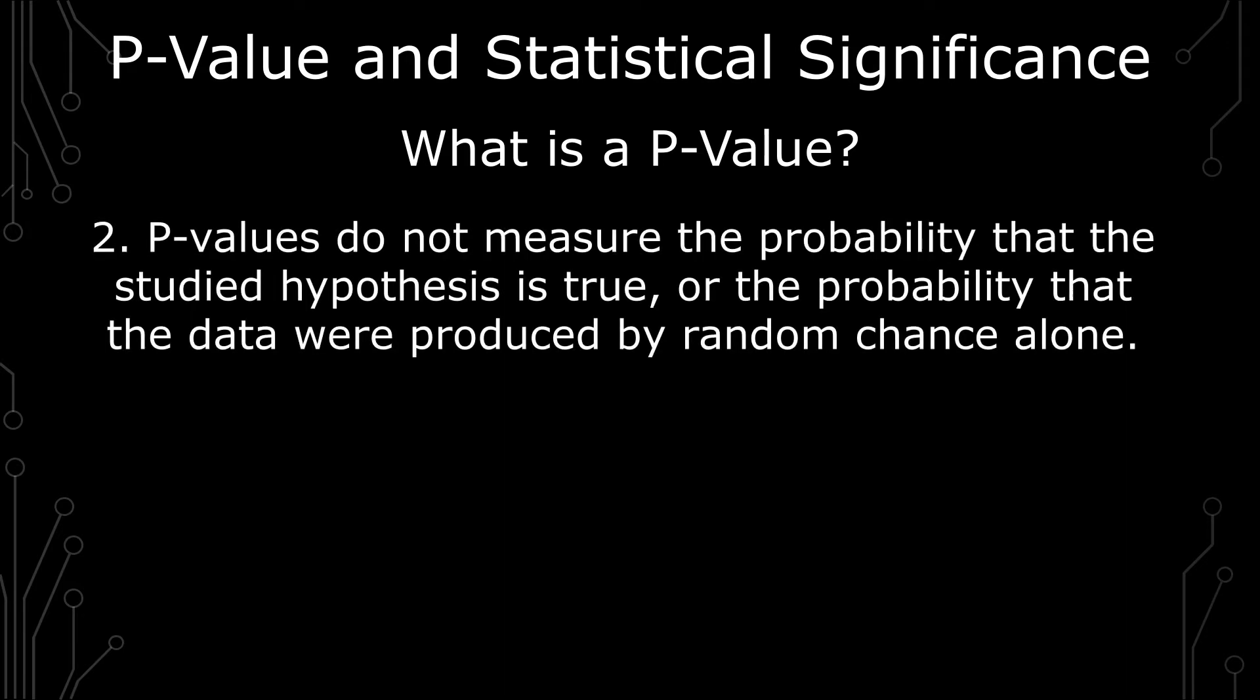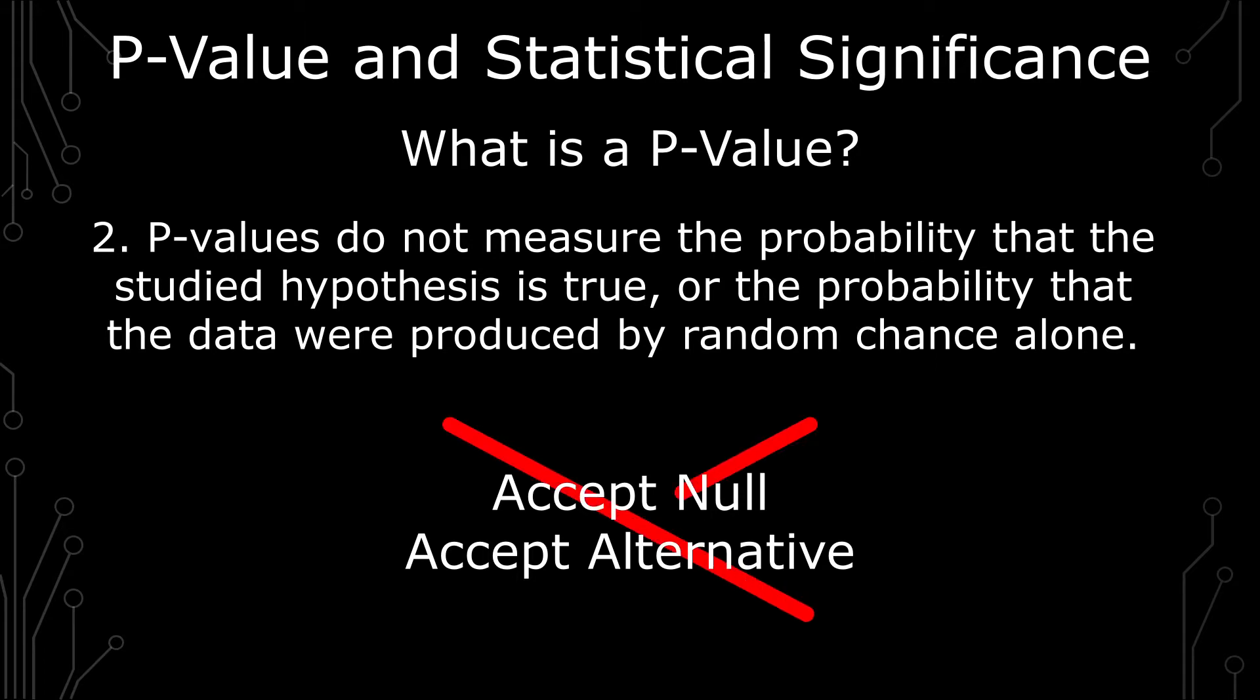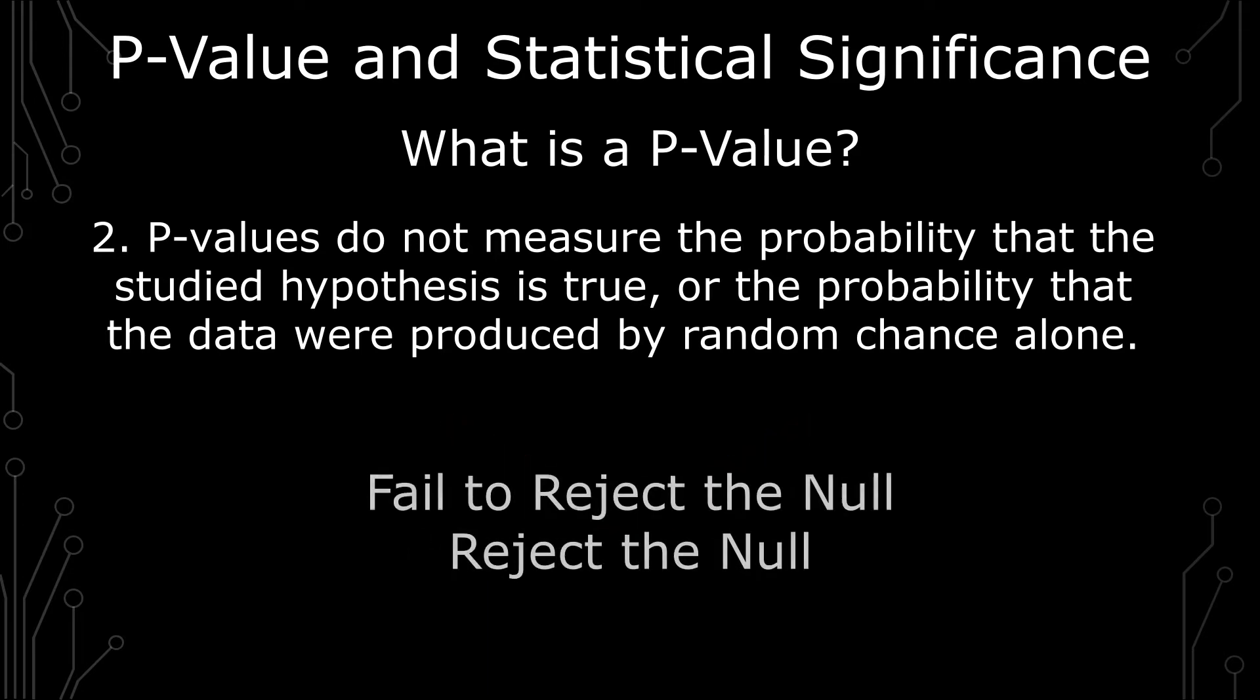The second is p-values do not measure the probability that the studied hypothesis is true or the probability that the data were produced by random chance alone. So this is to combat how a lot of people are saying accepting the null hypothesis, because by saying accepting the null hypothesis you're actually saying a philosophical statement that it's true and a hypothesis can't actually state that. That's why when you interpret hypotheses it's fail to reject or reject the null hypothesis.